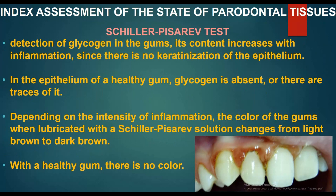Index assessment of the state of periodontal tissues: the Schiller-PCRF test detects glycogen in the gums — its content increases with inflammation since there is no keratinization of the epithelium. In the epithelium of a healthy gum, glycogen is absent or present only in traces. Depending on the intensity of inflammation, the color of the gums when lubricated with Schiller-PCRF solution changes from light brown to dark brown; with a healthy gum, there is no color change.